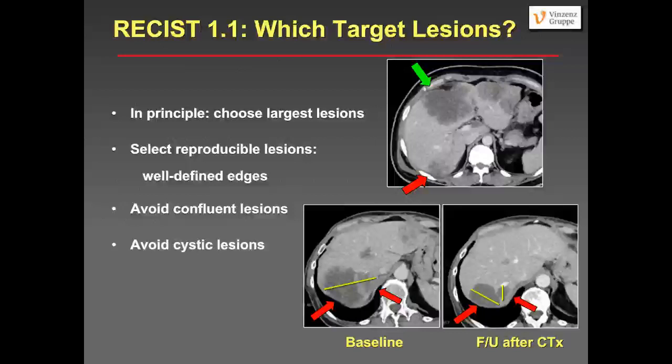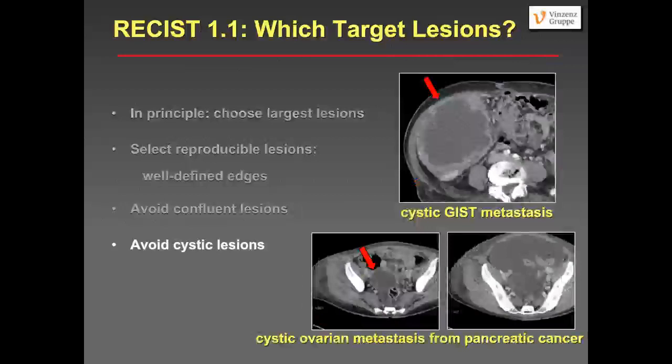Try to avoid, if possible, cystic lesions because they are quite unpredictable. You may use cystic lesions if you don't have any other good target lesions. A patient with peritoneal spread and also cystic ovarian metastasis — on follow-up the cystic lesion in the right ovary actually became smaller. So in rare circumstances you can also choose cystic lesions, but try to avoid them if you have better lesions to qualify as target lesions.